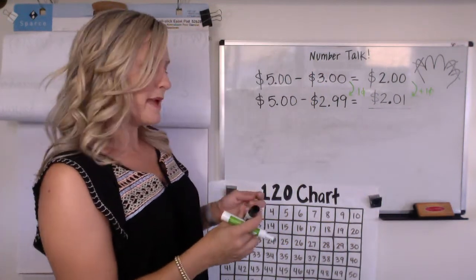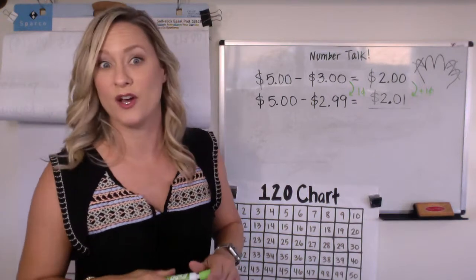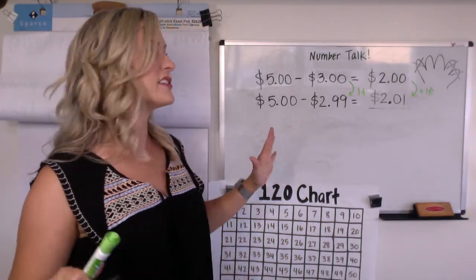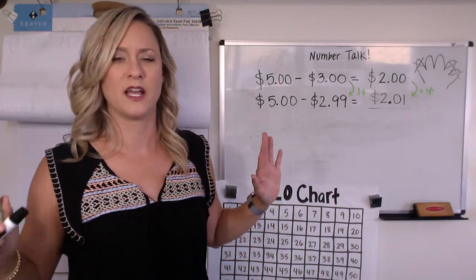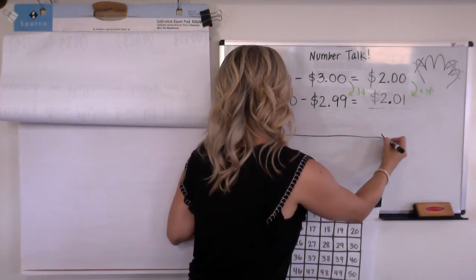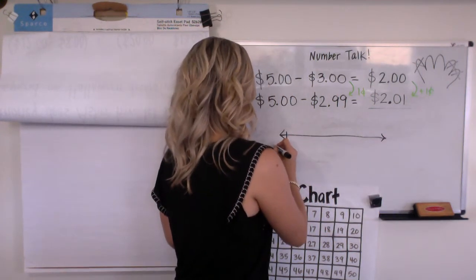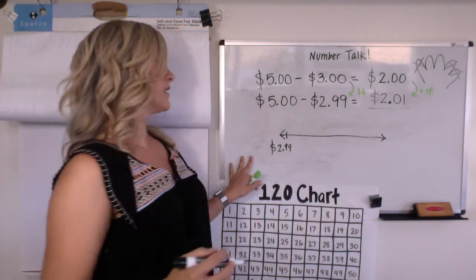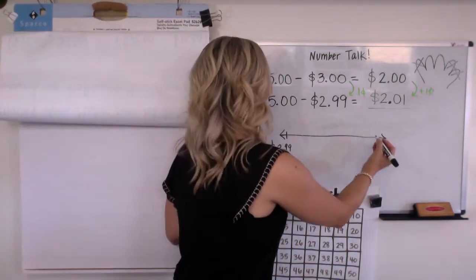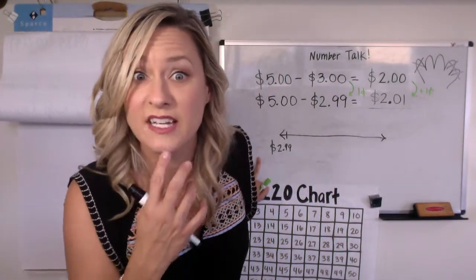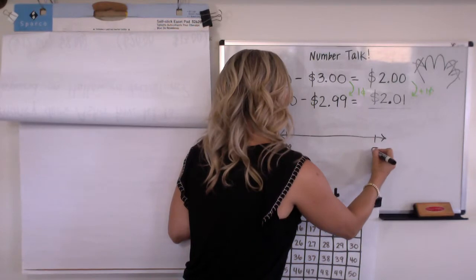All right, maybe that made no sense to you and you're thinking, Mrs. Compton, I used a number line to solve this one. I bet a lot of you are probably thinking about that. So let's see what would that look like. Maybe you thought about if I have two dollars and ninety-nine cents, and let's see, I'm taking or I want to count up to five dollars. Did anyone do that?